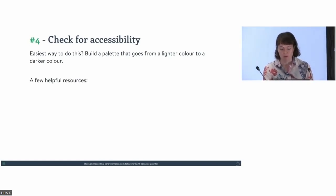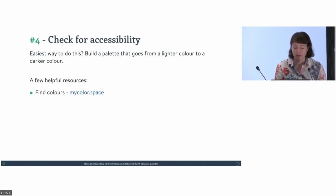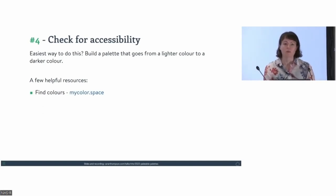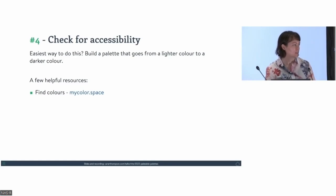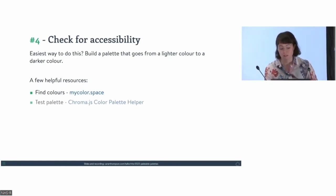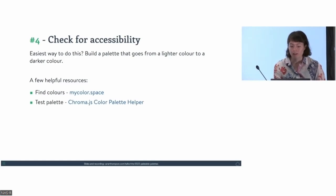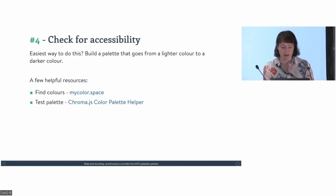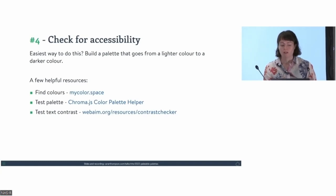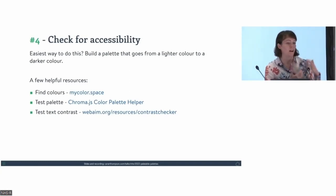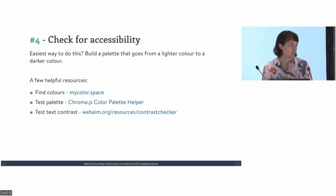To find accessible colours, you can use mycolorspace — give it a colour, hit go, and it gives you a palette going from darker to lighter. You can also test your colour palettes at a dedicated website and test the contrast of text against background colour. If you're using text boxes with a coloured background, it's worth making sure the contrast works — especially if you choose all colours of the same darkness, desaturating them won't work.